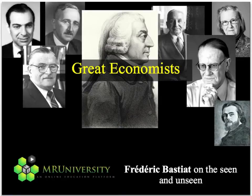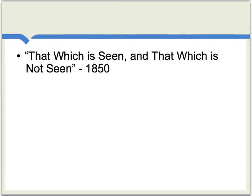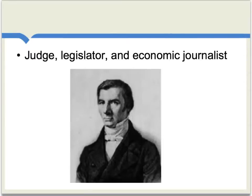Let's consider a famous essay by Frederick Bastiat on the seen versus the unseen, a classic theme in economic reasoning. This essay comes from 1850 and the title is 'That Which Is Seen and That Which Is Not Seen.' It's available online and free. Bastiat was first a judge and a legislator and then a very important economic journalist. He's a very clear and forceful writer and gives classic statements of libertarian arguments for free markets, most of all for free trade. A lot of people still read Bastiat today, especially classical liberals and libertarians.